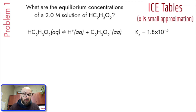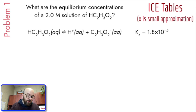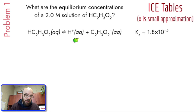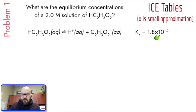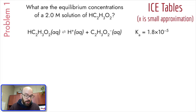Our first problem asks: what are the equilibrium concentrations of a 2.0 molar solution of HC₂H₃O₂, which is acetic acid? Acetic acid dissociates into H⁺ plus acetate ion — an equilibrium reaction because these can recombine. Our Ka value is 1.8 times 10 to the negative fifth. That's a very small K value, which is going to be very important for our x-is-small approximation.